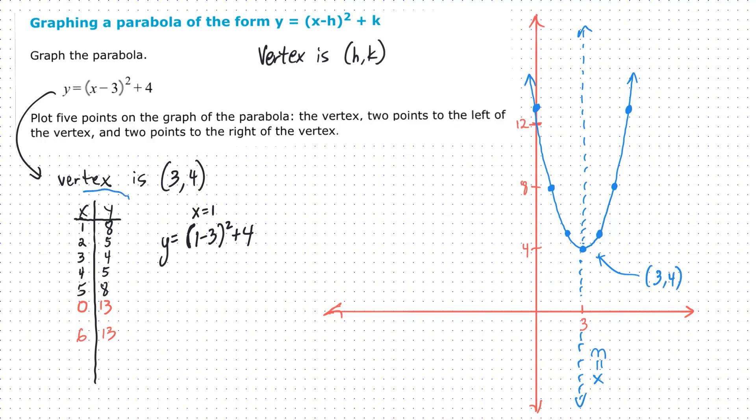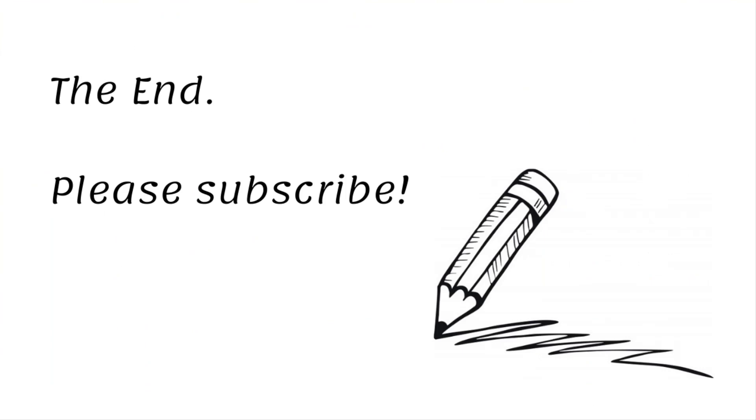You can also label things in a t-chart. That is also very much acceptable. It looks like my ruler got in the way, but I did circle that. So there you go. You've graphed the formula y equals the quantity x minus h squared plus k. Thanks for listening.